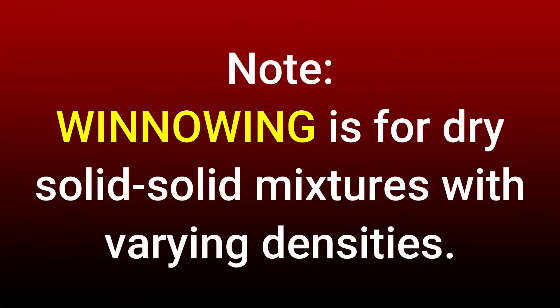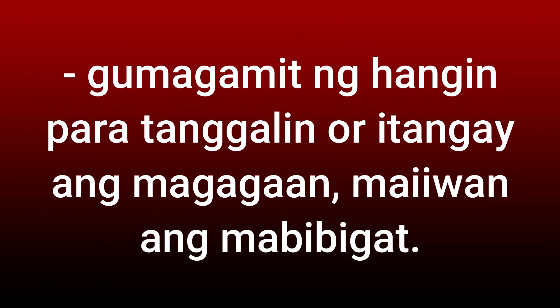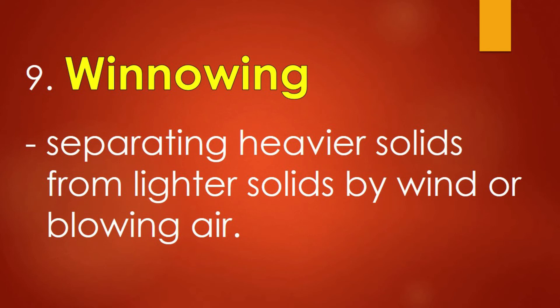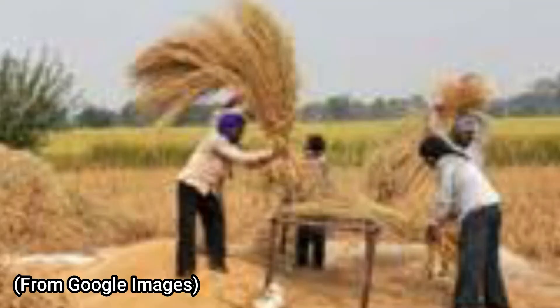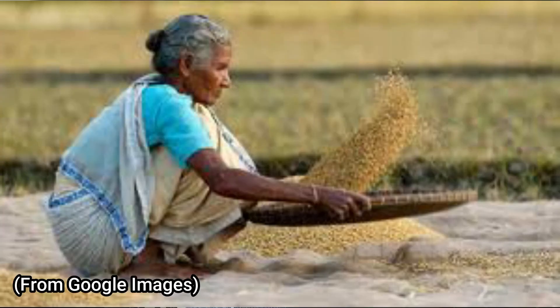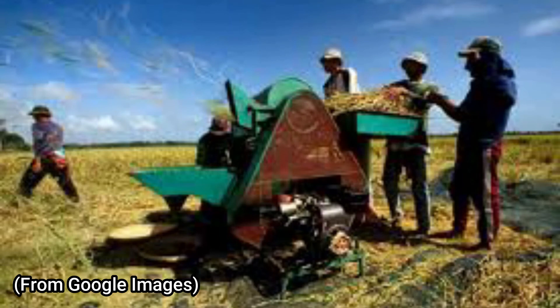And finally, number nine: winnowing. Winnowing is used for dry solid-to-solid mixtures of varying densities and weight. It uses wind or blowing air to remove the lighter parts, leaving behind the heavier parts. Winnowing is used to separate heavier and lighter components of a mixture by wind or by blowing air. A familiar example is in the rice fields, where the husks of rice (ipa) are separated from the heavier grains — our grandparents used to do this by tossing palay in a bilao. A more modern method uses a machine called a grain thresher.